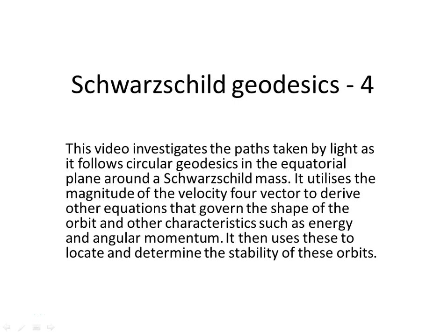This video investigates the paths taken by light as it follows circular geodesics in the equatorial plane around a Schwarzschild mass. It utilizes the magnitude of the 4-velocity vector to derive equations that govern the shape of the orbit and other characteristics such as energy and angular momentum. It then uses these to locate and determine the stability of these orbits.